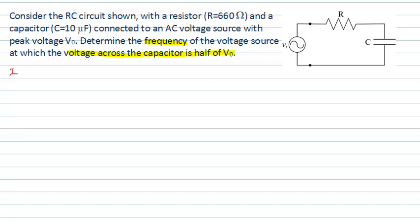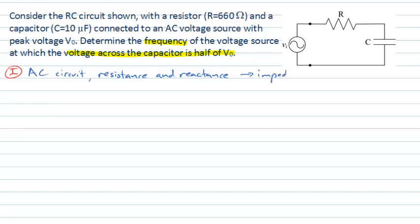We can begin by interpreting the question. It's the voltage across the capacitor that's of interest, and it's the frequency where that particular voltage relationship will occur. So in an AC circuit, which will behave differently to a DC circuit, it's a combination of resistance — because we have a resistor there — and reactance. How does the capacitor affect the circuit when driven with a time-varying voltage? This involves an understanding of impedance.